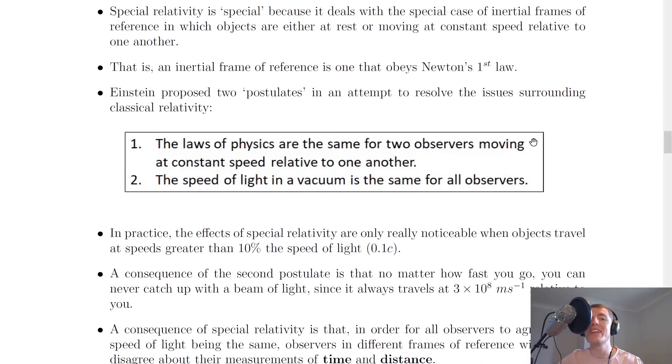It goes on to say here that Einstein proposed two postulates in an attempt to resolve the issues surrounding classical relativity. Remember these issues for classical relativity were covered in the theory video for reference frames and relative velocity, so Einstein's two postulates helped to explain this.